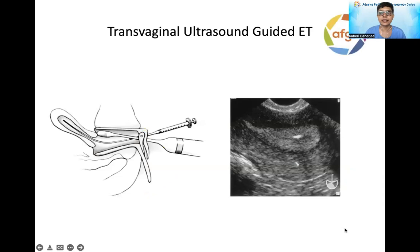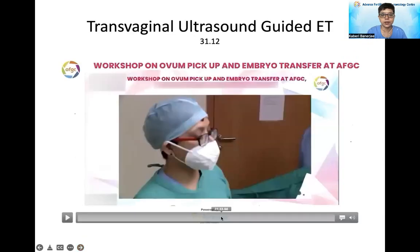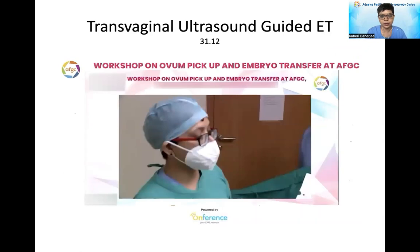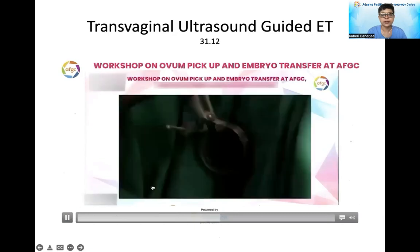The transvaginal ultrasound technique: rather than scanning from the abdomen, we scan from below and try to visualize the endometrium from there. This is especially useful in cases of obesity, scarring, and adhesions. This was demonstrated at a workshop where the transvaginal technique is shown in practice.